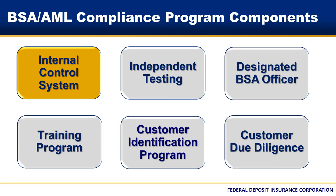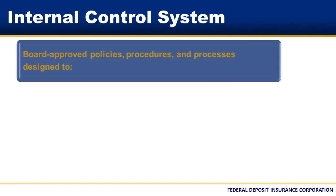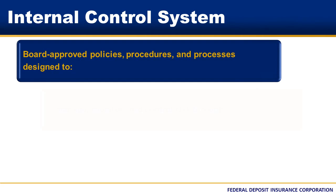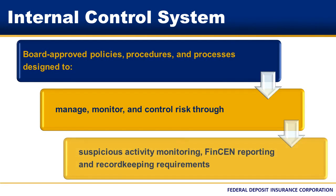Let's start with the internal control system. A system of internal controls consists of policies, procedures, and processes that management uses to manage, monitor, and control money laundering and terrorist financing risks. Internal controls should be designed to assist in ongoing compliance with BSA AML regulations. Policies and procedures should address suspicious activity monitoring and FinCEN reporting and record-keeping requirements, which we'll discuss later.